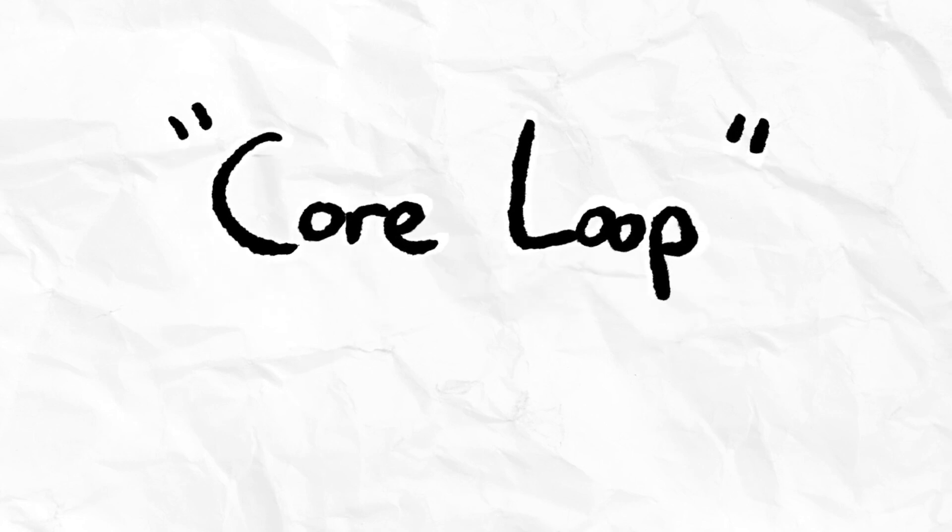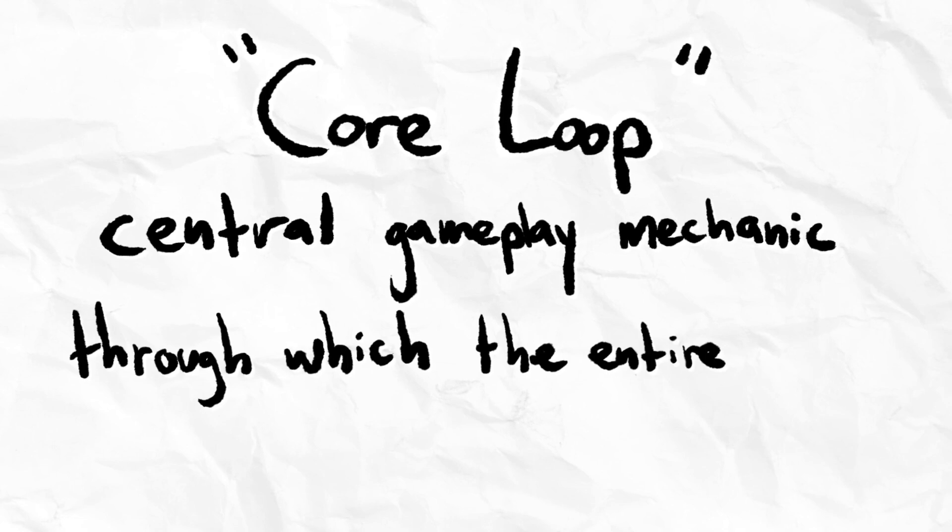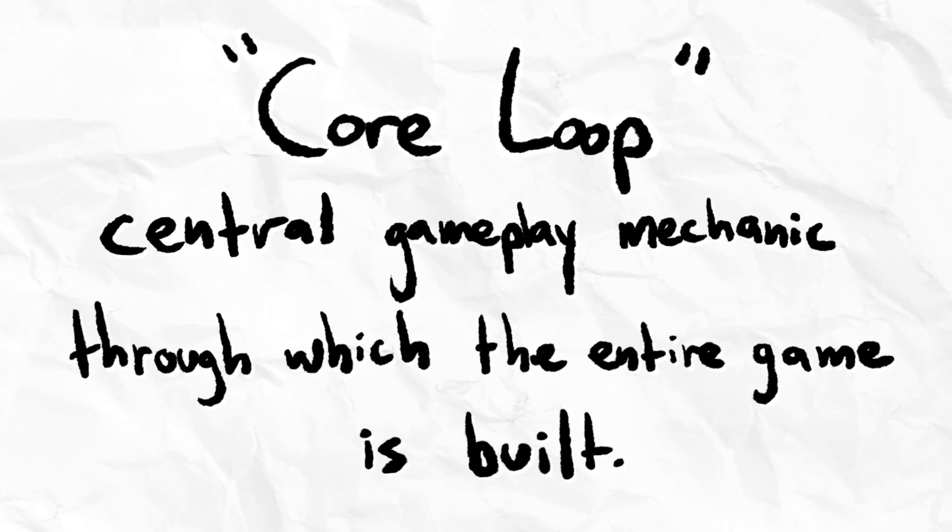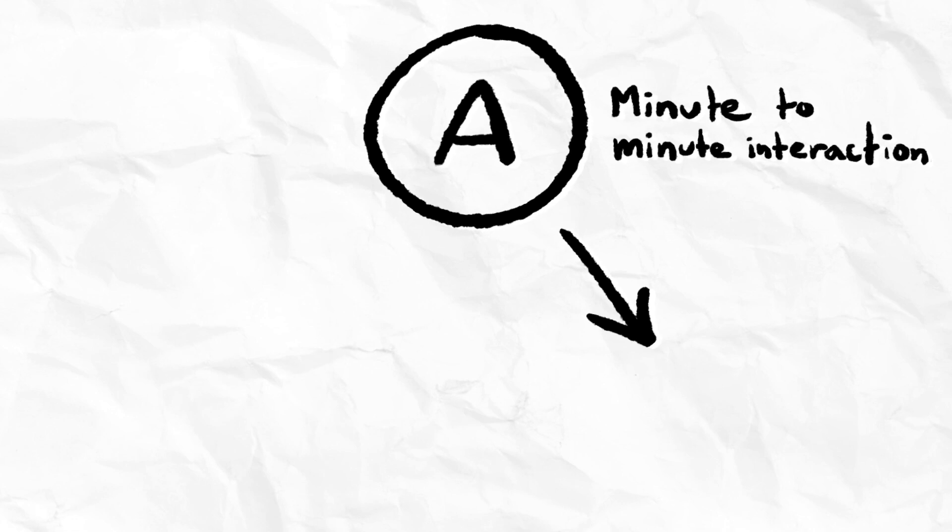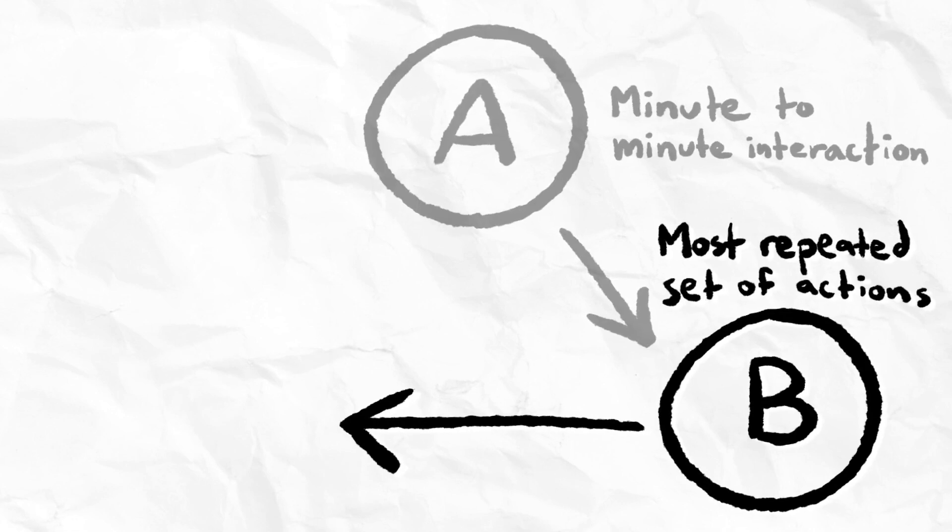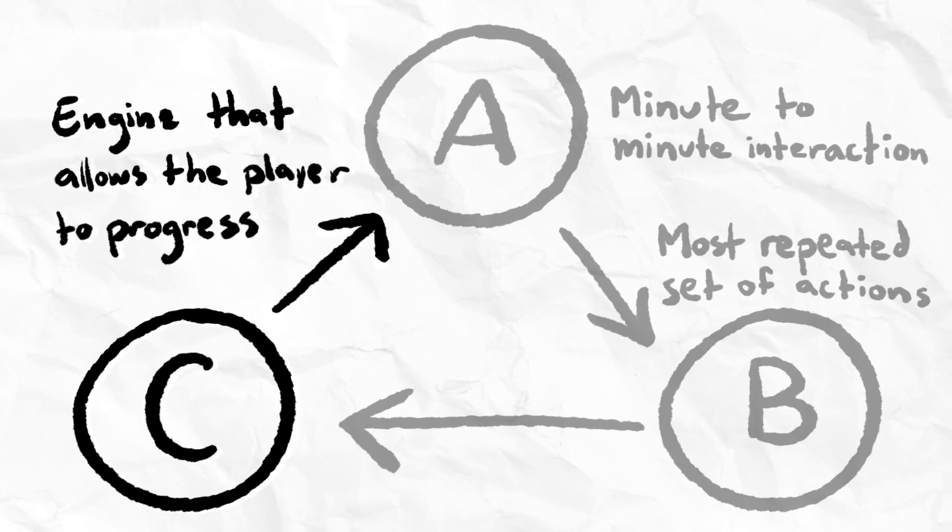A game's core loop is the central gameplay mechanic through which the entire game is built. A core loop can be broken down into three sections: the minute-to-minute player interaction, the most repeated set of actions, and the engine that enables the player to progress.